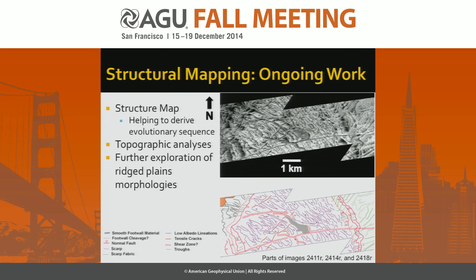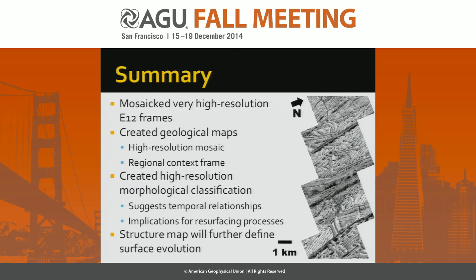For future and ongoing work, we're creating a structure map of this region to further derive the evolutionary sequence and narrow down the possibilities. We also hope to combine topographic analysis of the overlaps where high-resolution images overlap to further help derive the structure and evolutionary sequence, and look forward to further exploration of different ridge plains morphologies. In summary: we mosaiced very high-resolution E12 frames, created a geological map, created a high-resolution morphological classification, and this suggests temporal relationships based on cross-cutting relationships — with big implications for resurfacing processes on Europa.